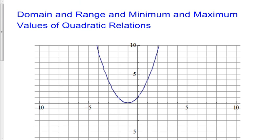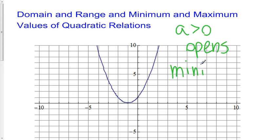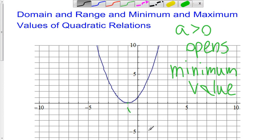Let's talk about domain and range, minimums and maximums for quadratic relations. Any time a is greater than zero, you're going to have a parabola that opens up, and if it opens up, it's going to have a minimum value. As you can see in this parabola, the smallest value occurs at the vertex — the minimum value occurs at the vertex.